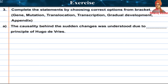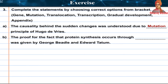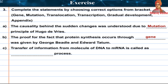Complete the statements by choosing the correct options. A: The cause behind the sudden changes was understood due to the mutation principle of Hugo de Vries. B: The proof for the fact that protein synthesis occurs through genes was given by George Beadle and Edward Tatum. C: Transfer of information from molecule of DNA to mRNA is called the transcription process.